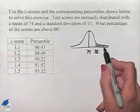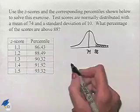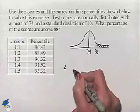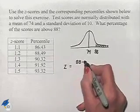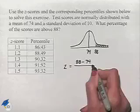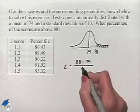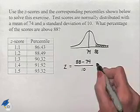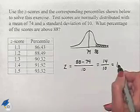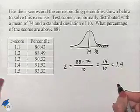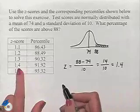To figure out what that percentile is going to be, we're going to take our Z-score for 88. We'll find that by taking 88 minus 74, which is our mean, and dividing that by the standard deviation of 10. The difference is 14. Dividing by 10 gives us 1.4. Now we're going to use the chart to find out the percentile related to a Z-score of 1.4.